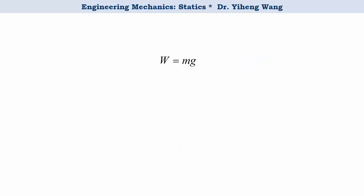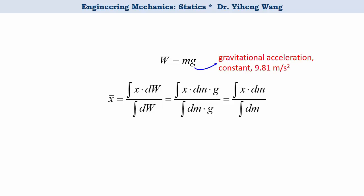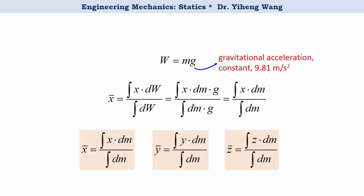We also know that weight equals mass times g, which is the gravitational acceleration, and for the general near-Earth situation it can be considered as a constant, about 9.81 meters per second squared. Therefore the constant g can be cancelled out from the numerator and denominator of this equation, and this new set of formulas now represent the coordinates of the center of mass for the rigid body. In this case, the center of gravity is the same as the center of mass.